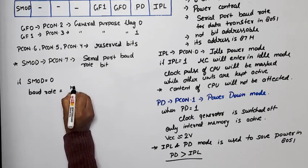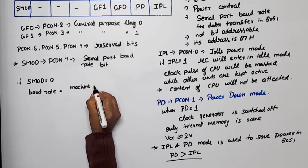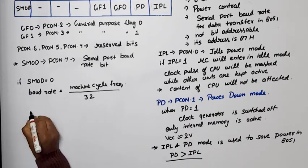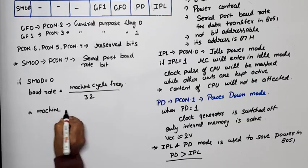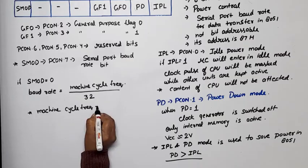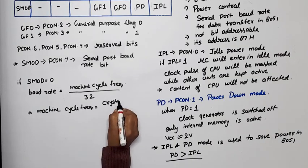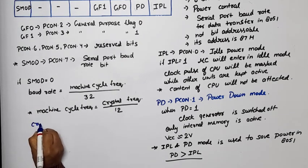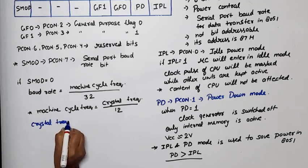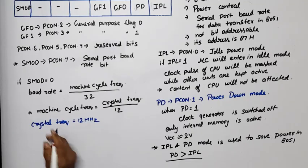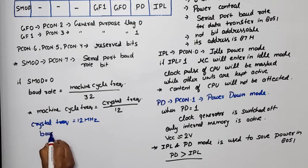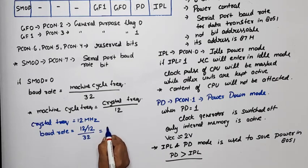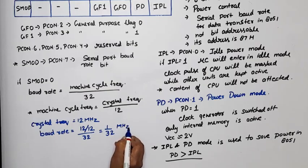Where machine cycle frequency is crystal oscillator frequency, means crystal frequency divided by 12. Now assume crystal frequency is 12 megahertz. Then what? By using this formula, what is the baud rate? Baud rate will be equal to 12 divided by 12 divided by 32, means 1 by 32 megahertz.